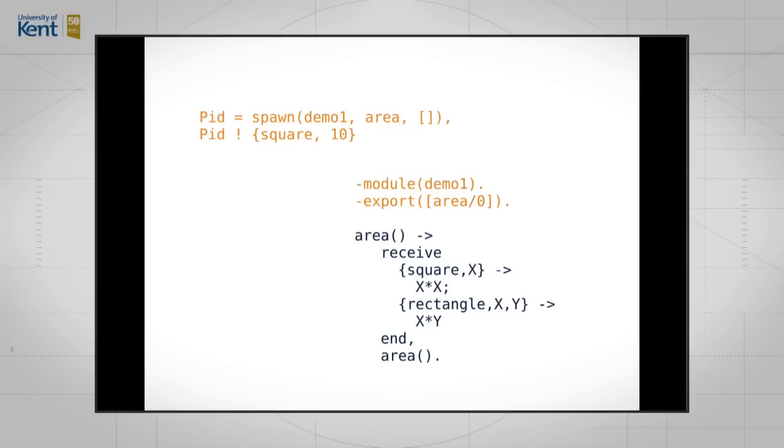So how do we call all that stuff? Well, we need to create a process. That's done with a primitive called spawn, and then we need to send messages to the process, and that's done with a primitive called send. Send is written with an exclamation mark. To activate that process and get it to do something, we'll say pid is spawn demo one area nil, and then we'll say pid bang square of 10. What's demo one? That's the name of the module where the process is defined. I've made a very simple module called demo one. It exports a function called area, area zero with zero arguments, and that has this receive statement that's going to receive a message that's sent to it and do something with that message.